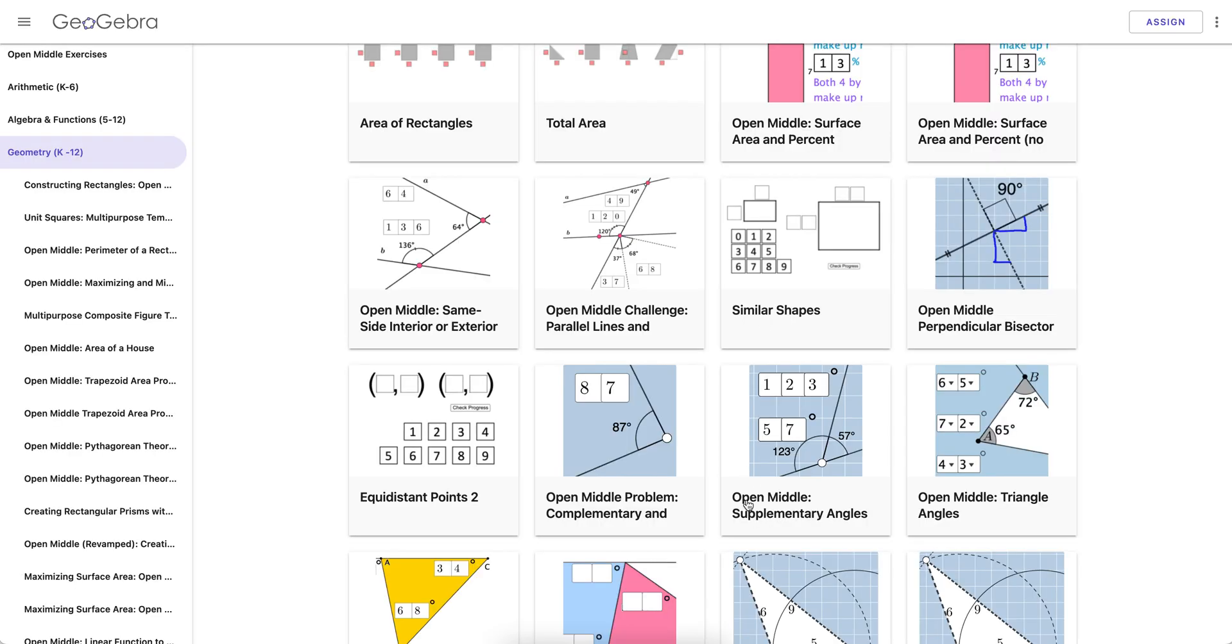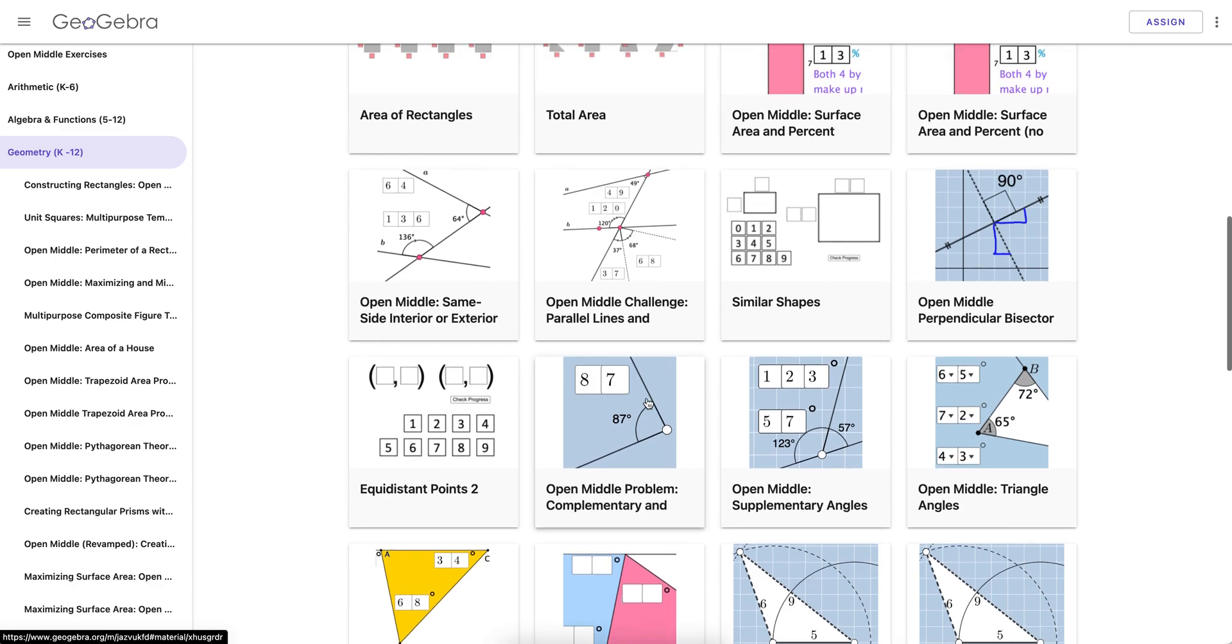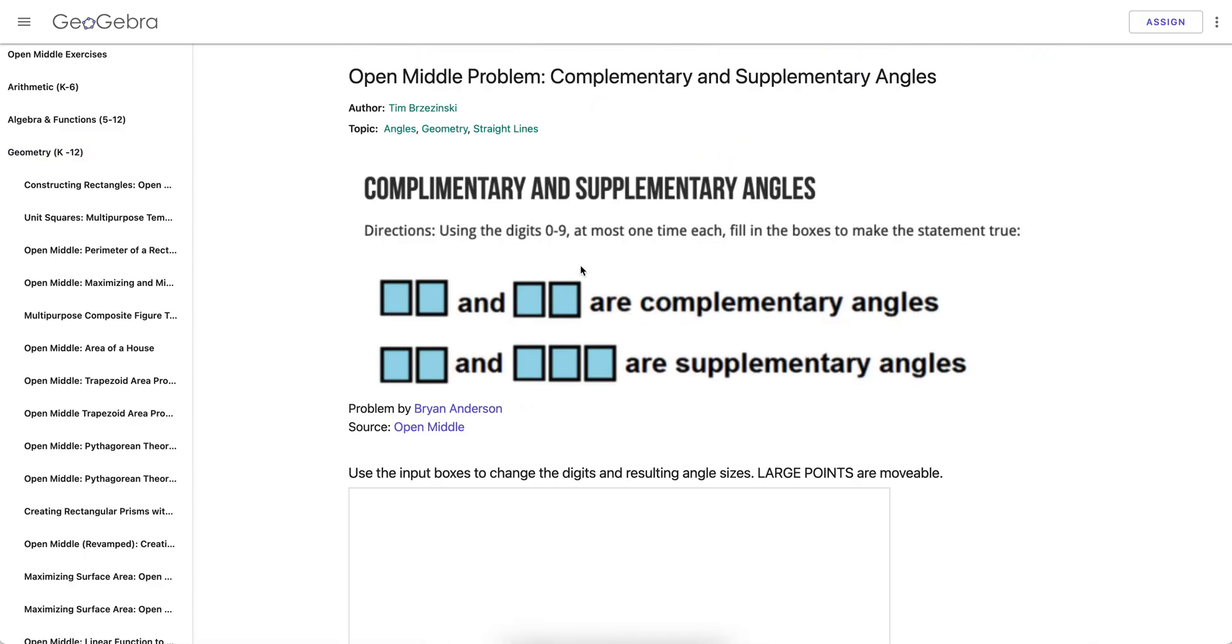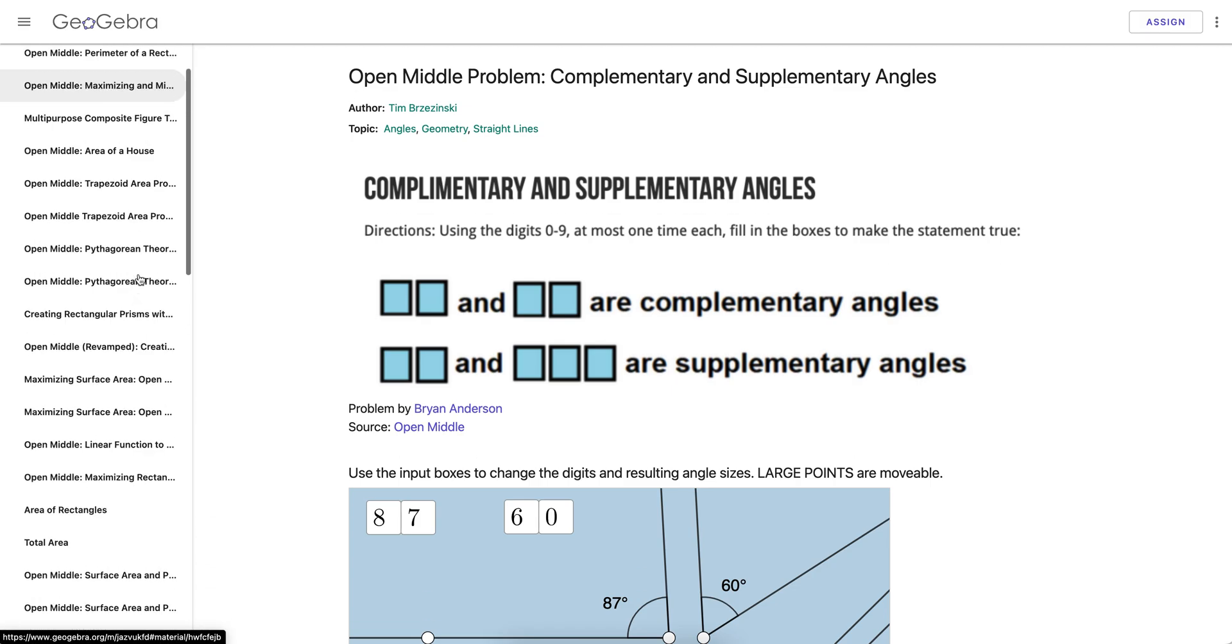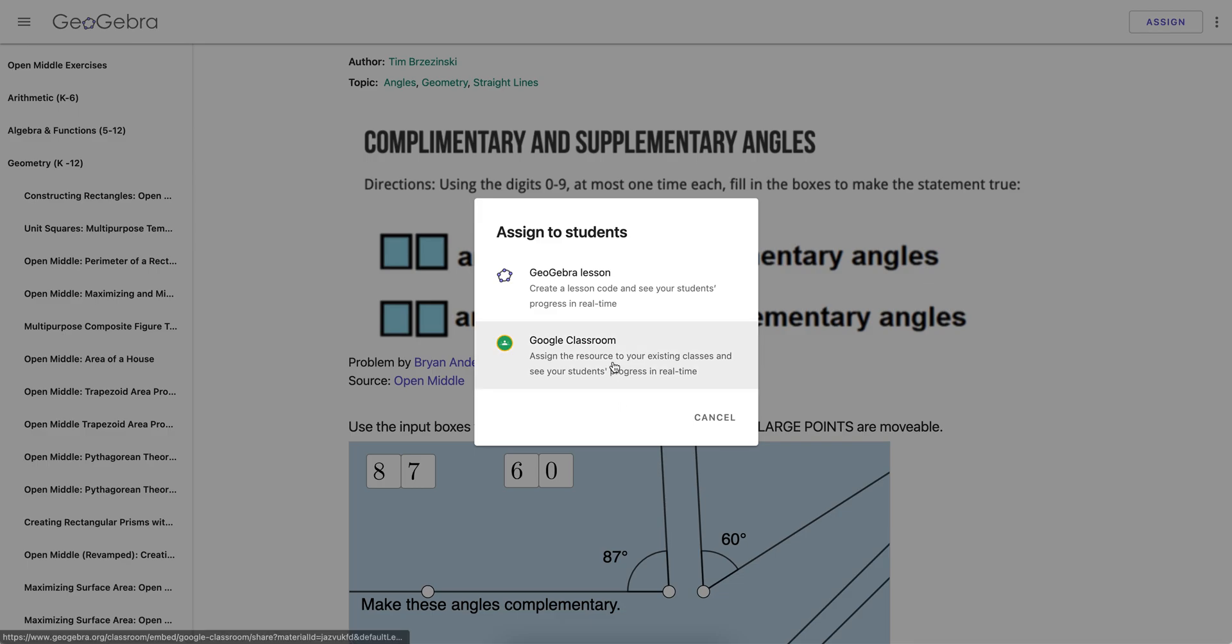However, if you are in a book, the one word of caution I want to give you is that if you are in a book, this same activity right here is found in a GeoGebra book. It's found among this whole collection of hundreds of activities right here. If you hit assign Google Classroom now, it's actually going to make a Google Classroom for the whole book and you don't want to do that.